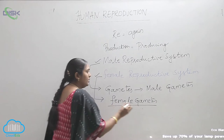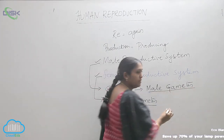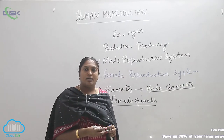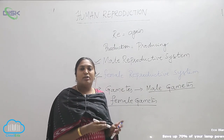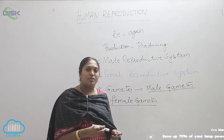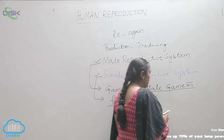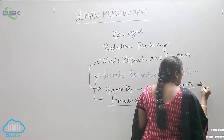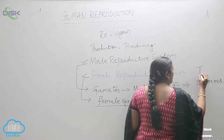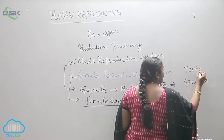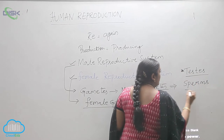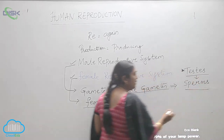Now, what are the male gametes? The organs responsible for the production of the male generations are the testes, and the ultimate product is the sperms.